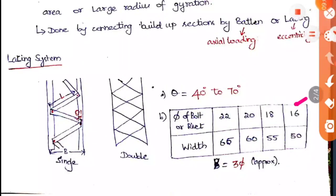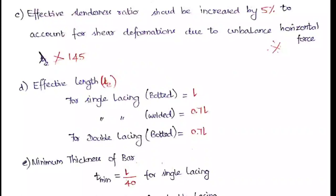The effective slenderness ratio should be increased by 5% when using a lacing system, to account for shear deformations due to unbalanced horizontal force. The slenderness ratio should not exceed 145. Effective lengths: single lacing bolted = l; single lacing welded = 0.7l; double lacing bolted = 0.7l. Minimum thickness of bar: l/40 for single lacing and l/60 for batten or double lacing.